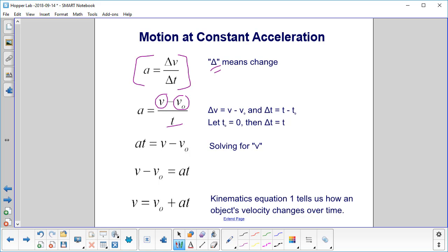Next, we multiply both sides by t, and we get at equals v minus v0.